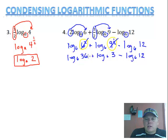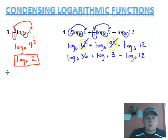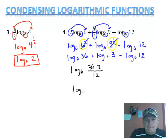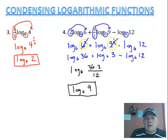So I have log base 6 of 36 plus log base 6 of 3 minus log base 6 of 12. Anything that's added or positive is going to go in the numerator; anything with a negative or subtraction goes in the denominator. So: log base 6 — 36 goes on top, 3 goes on top in multiplication, and the 12 goes in the bottom. 36 times 3 divided by 12 just gives me 9. So log base 6 of 9 is my simplified answer.